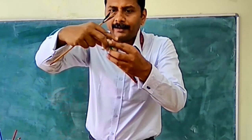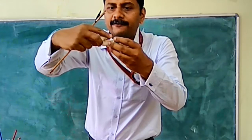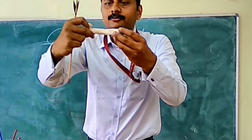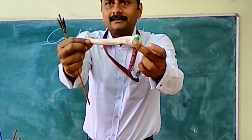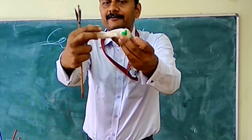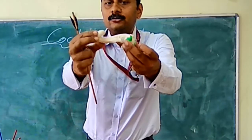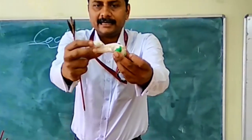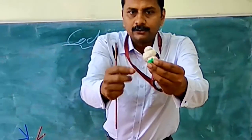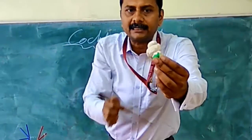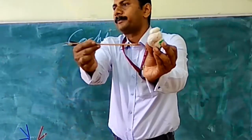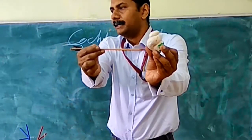If you open up or unfold the cochlea, it will come out straight. Then if you coil it back, it goes two-and-three-quarter turns like a snail — and it becomes a cochlea.